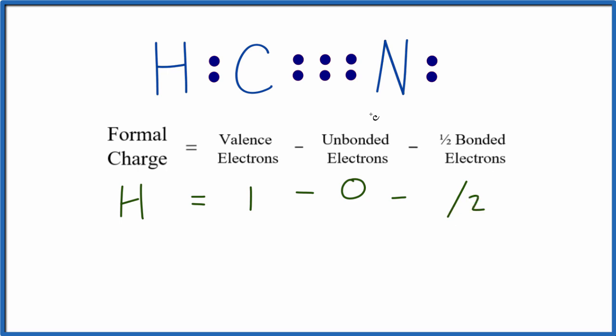One-half of the bonded - we have the two right here forming the chemical bond between the hydrogen and the carbon. So two over two. One minus zero minus one equals zero. The formal charge on the hydrogen is zero.